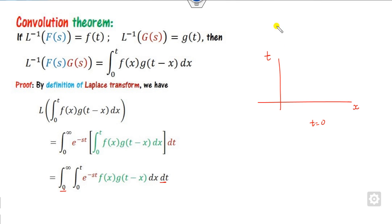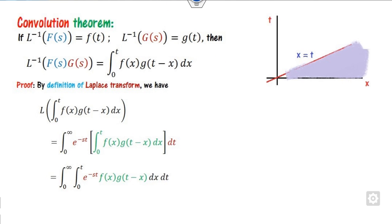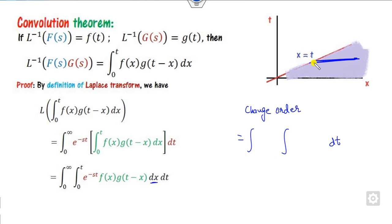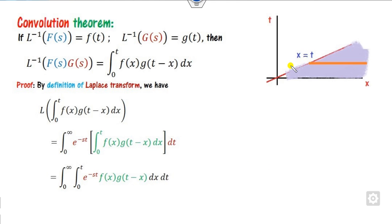To evaluate this double integral, we analyze the region of integration. Here t goes from 0 to infinity, and x goes from 0 to t, which corresponds to the region below the line x = t. Changing the order of integration, we integrate first with respect to t from x to infinity, then x from 0 to infinity — this is the horizontal strip.